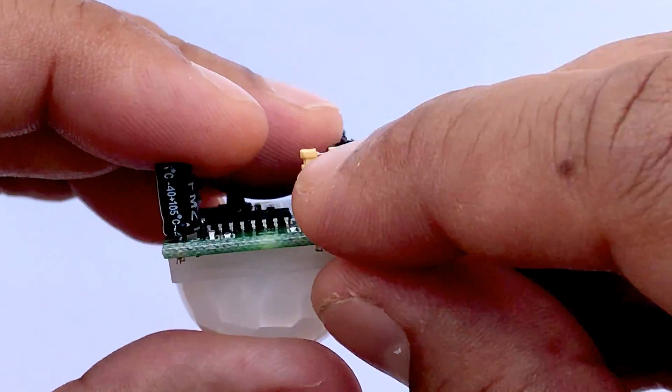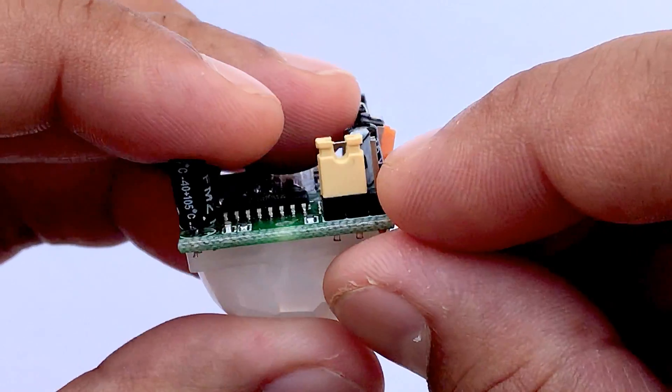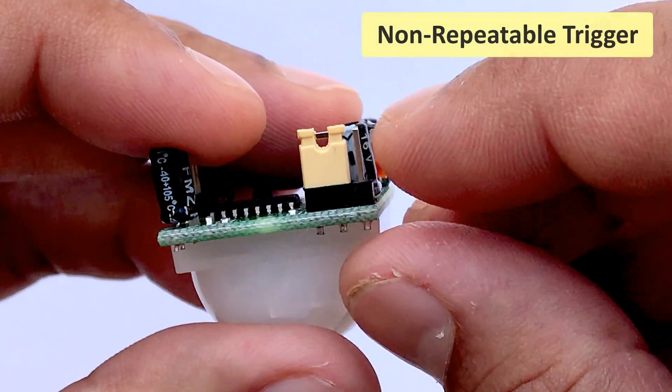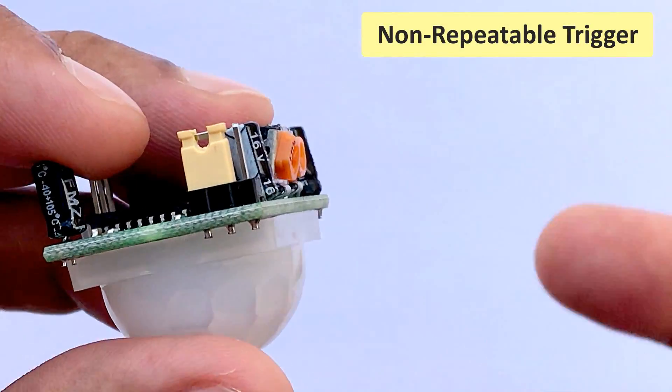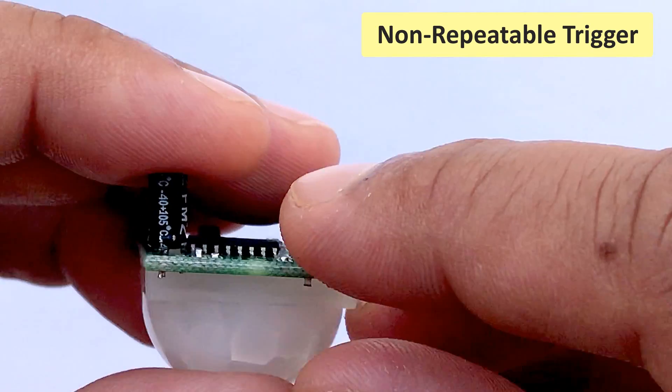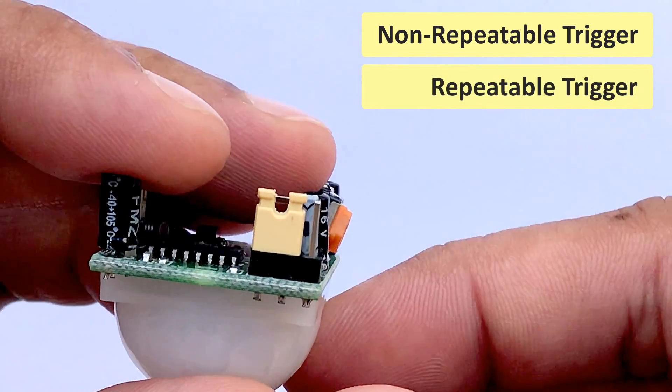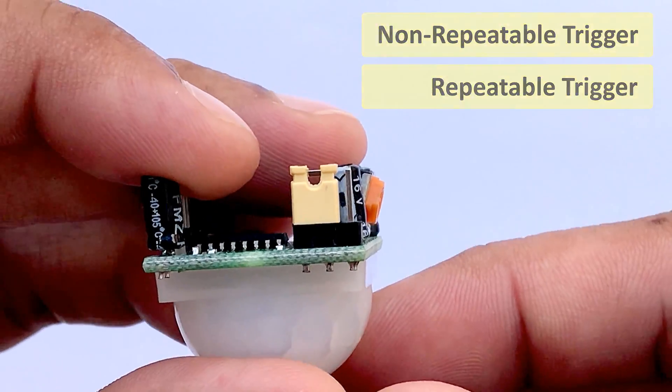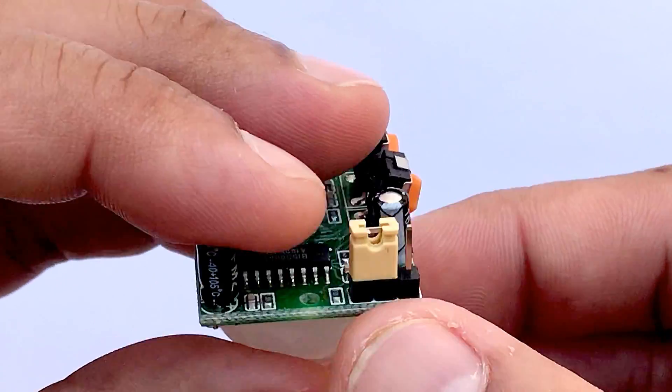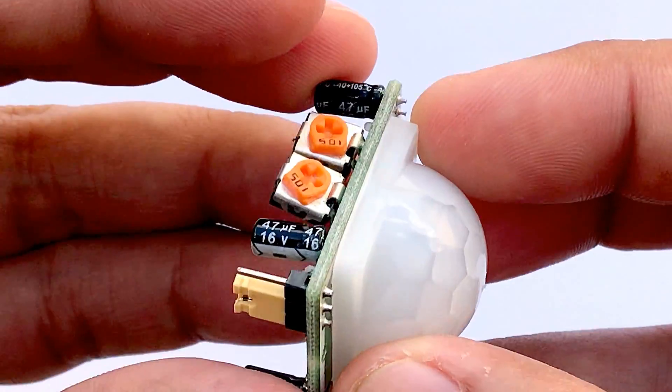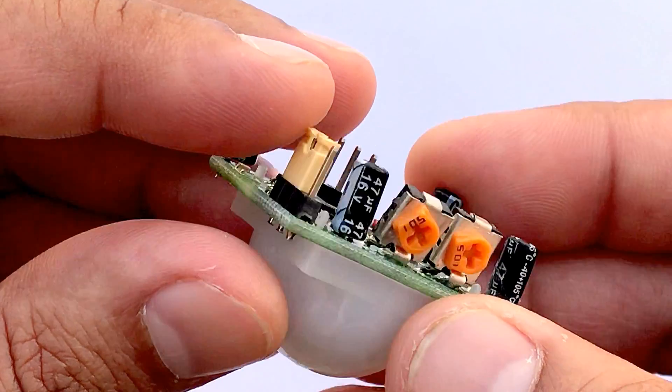There are three more pins on this module with a jumper between them to select the trigger modes. First one is called non-repeatable trigger. This one goes low as soon as the delay time is over. Second one is called repeatable trigger. It stays high as long as the object is in the proximity and will turn off once the object is gone and the delay is over. I will be using this mode in this project.